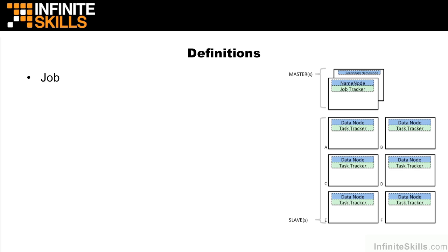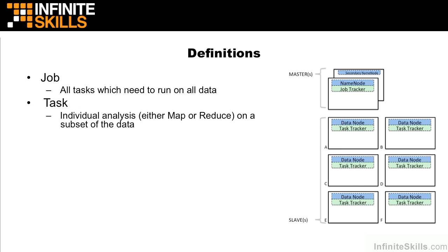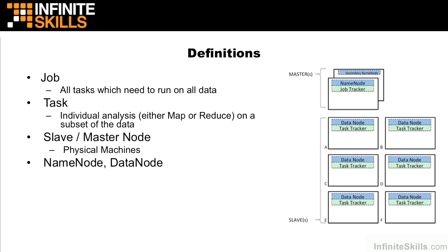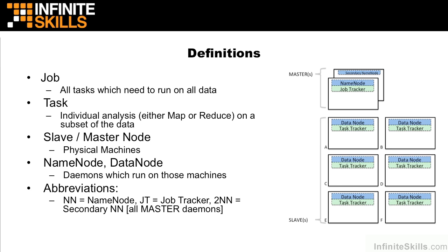First, a job is all the tasks which need to run on all the data. This includes the MapReduce code as well as the HDFS data inputs that we're going to analyze. A task is a single piece of individual analysis — either a MapTask or a ReduceTask — that occurs on a subset of the data. Slave and master nodes are physical machines, which is easy to confuse with name nodes and data nodes. The name node and data node are the individual JVM daemons that run on those physical machines. We also use abbreviations: NN is the name node, JT is the job tracker, and 2NN is the secondary name node — all master daemons.